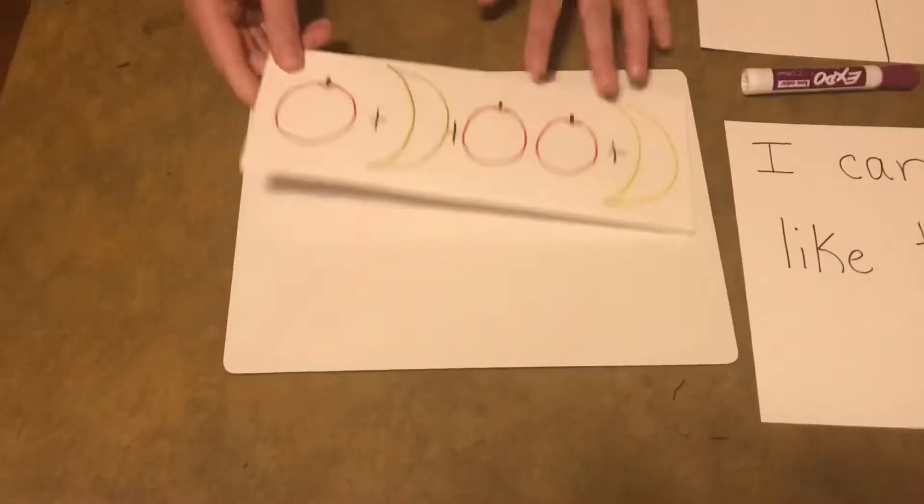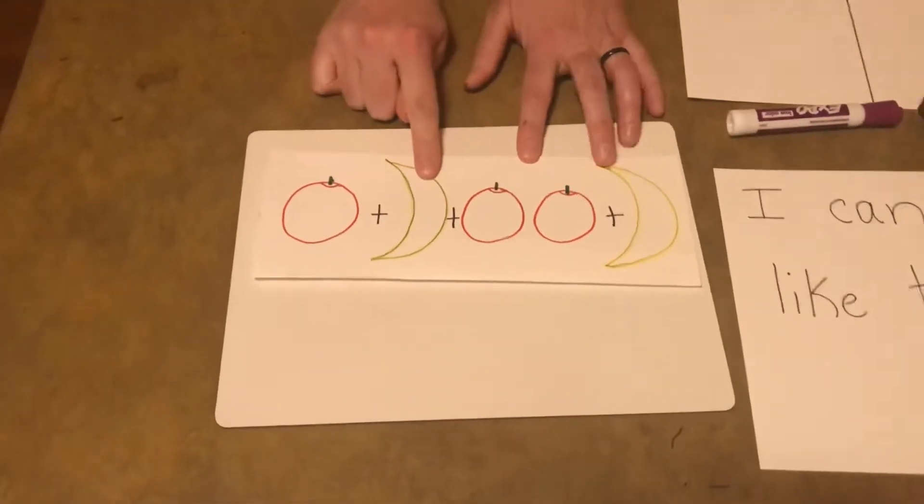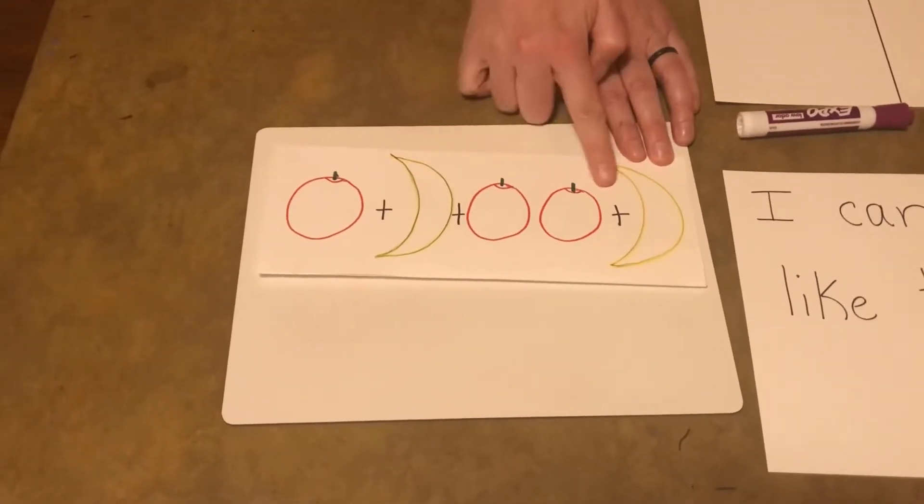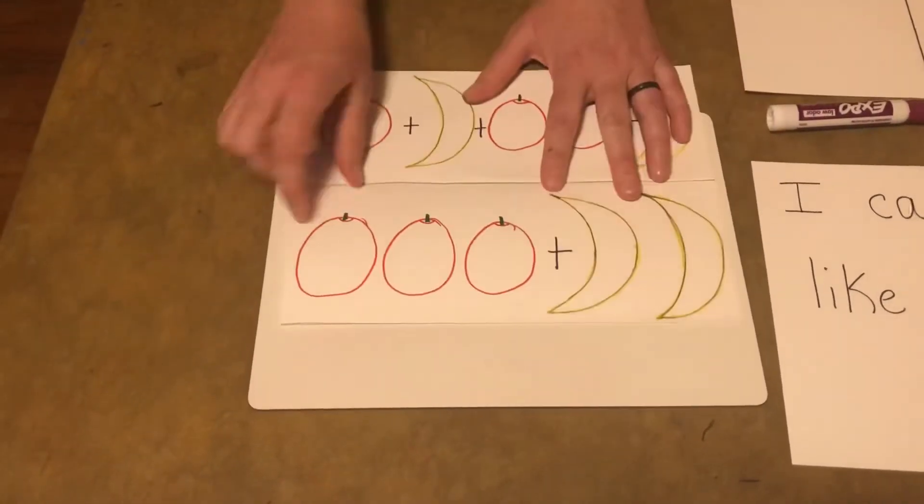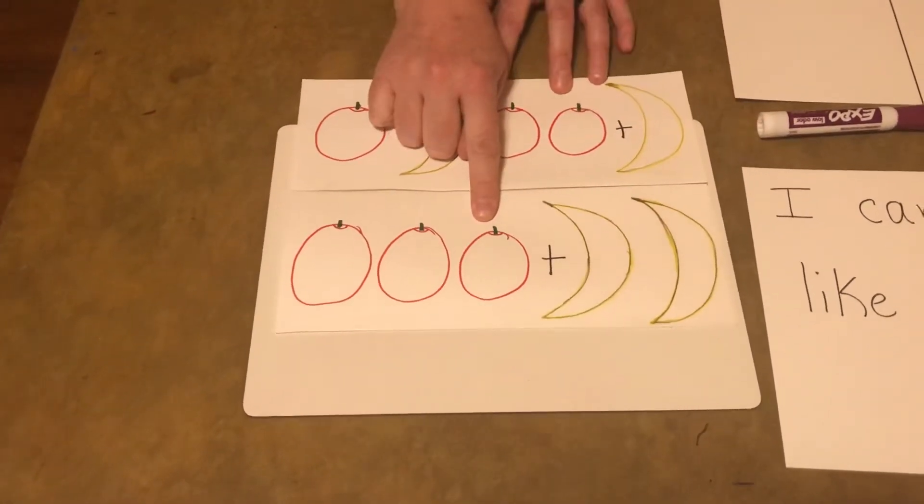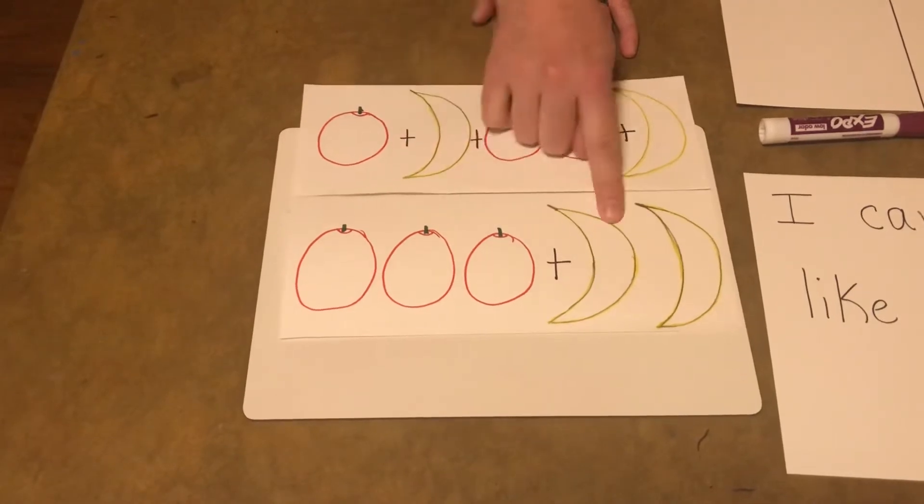So let's look at this in a picture. We have one apple plus one banana plus two apples plus one banana. That's what we had set out. And we combined like items or like terms, and we had three apples plus two bananas.